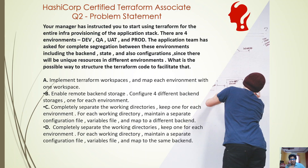Options C and D are similar in structure. Option C says to completely separate the working directories — one per environment — and for each working directory maintain a separate configuration file, a separate variable file, and map each to a different backend. This is what we want: complete segregation with one folder each for dev, QA, UAT, and prod.